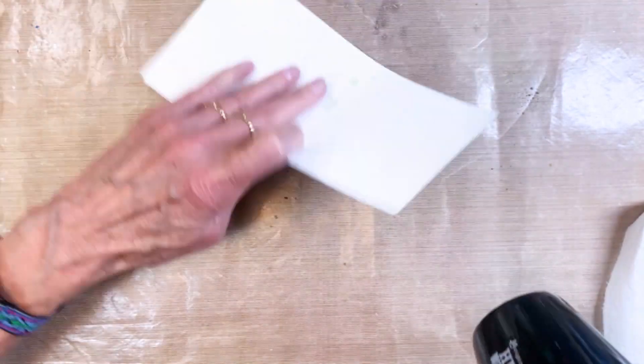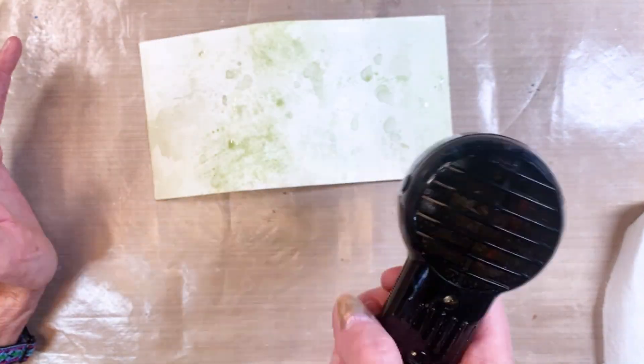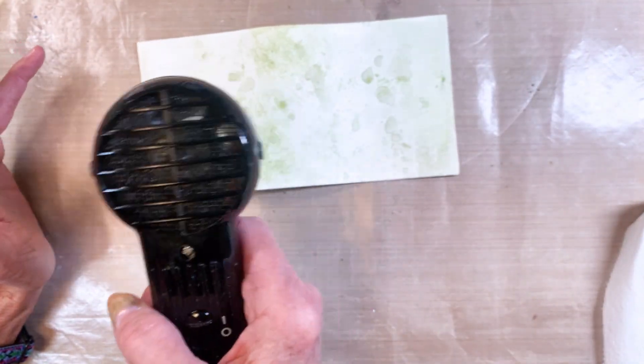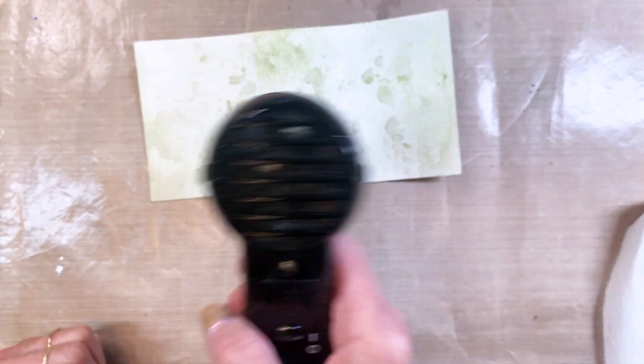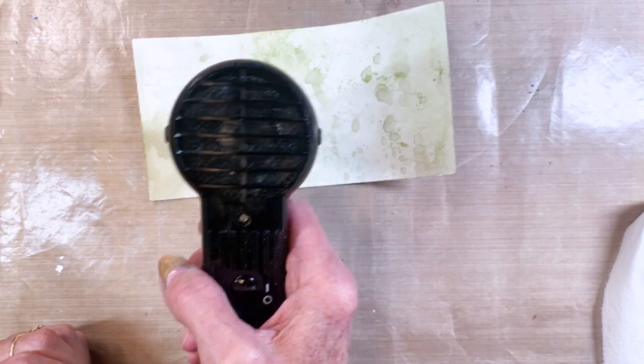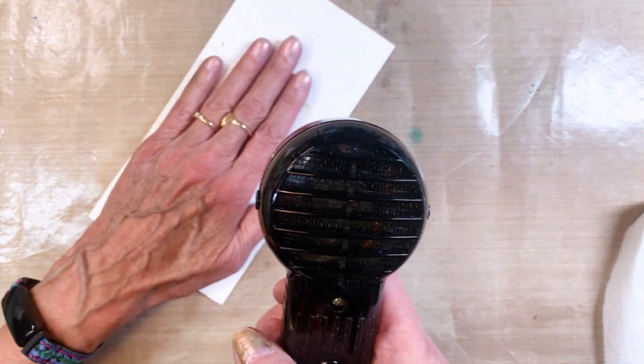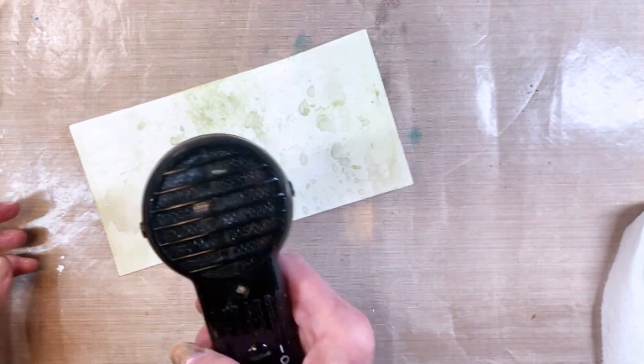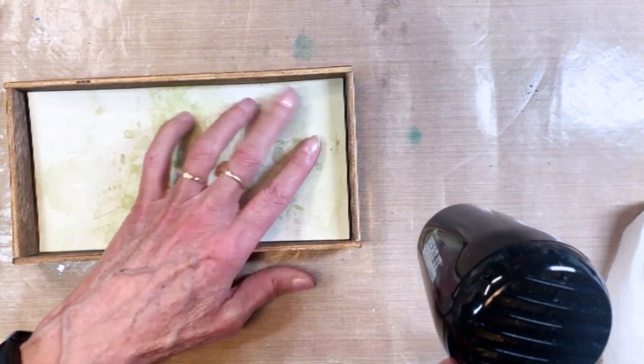Once I'm happy with it, I went ahead and ink smooshed it. I used bundled sage and antique linen, which are my go-to colors for green type background. I'm just drying and adding more water, dipping and drying until I'm happy with the background. There it is in the box.